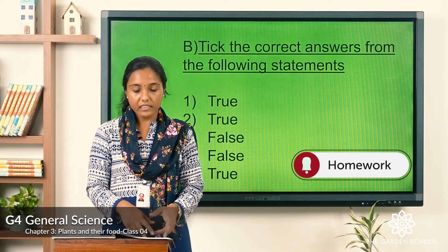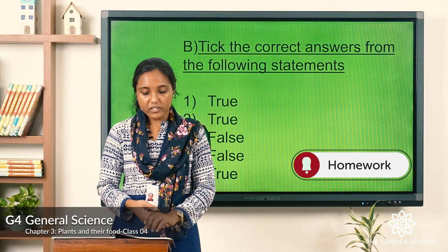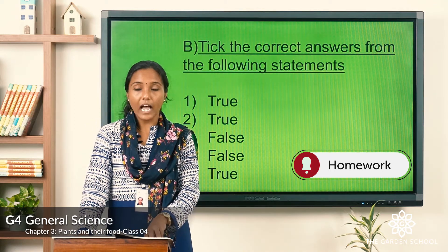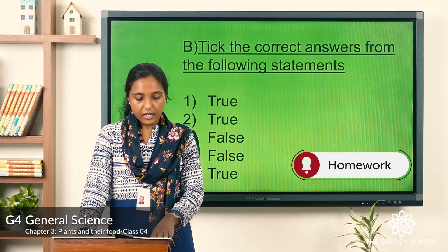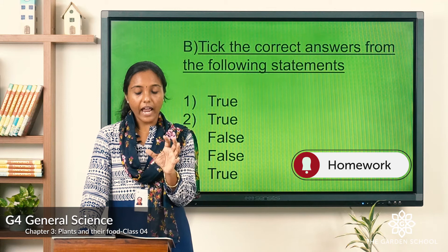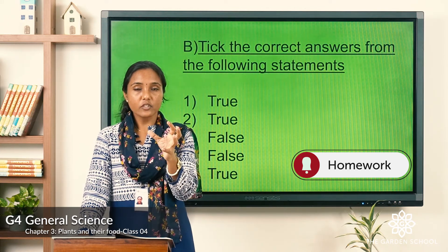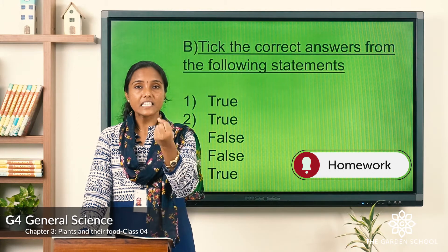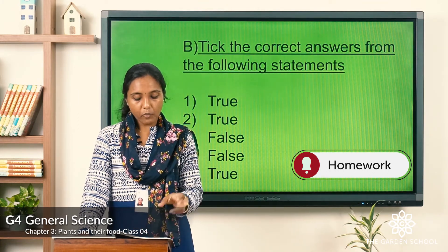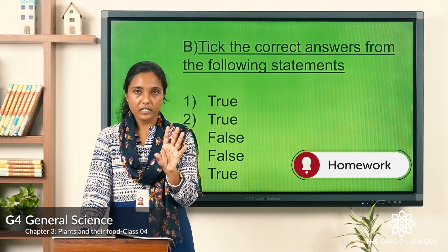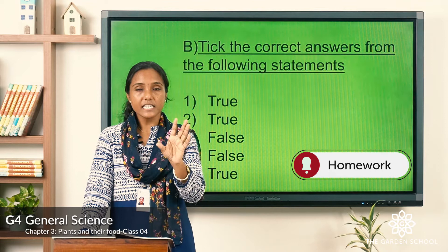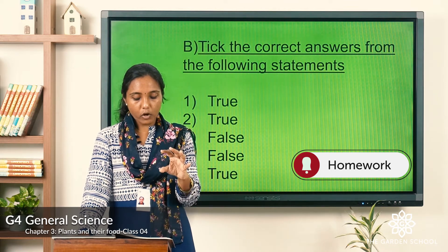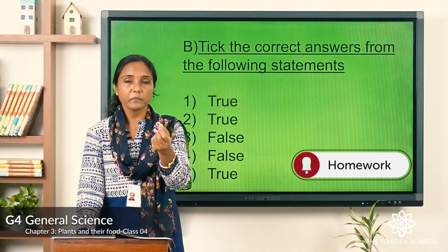There are also two more activities. The third activity asks: what happens if a plant does not receive sunlight? Take two pots, make a hole at the bottom of each, fill them with soil, and sow about fifteen moong or gram seeds in each pot. Keep the pots in a sunny place and keep the soil wet.